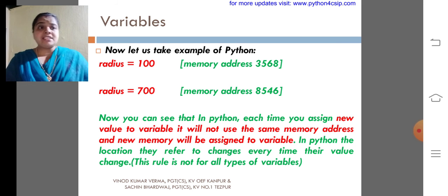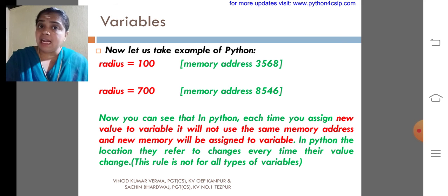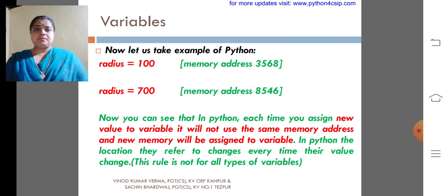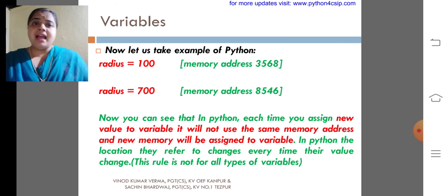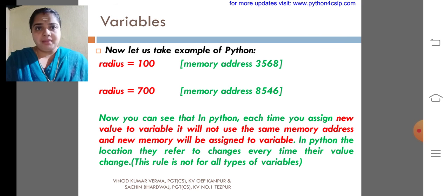Now you can see that in Python, each time you assign a new value to a variable, it will not use the same memory address. And new memory will be assigned to a variable. That is the speciality of Python. If we are having a variable and we assigned a value that is 100, and in future at the same variable you are trying to assign a new value called 700.